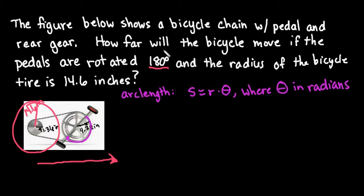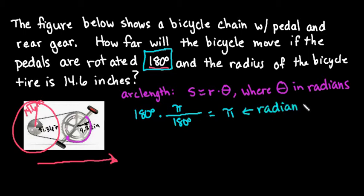The first thing we want to do is convert our 180 degrees into radians. Our conversion factor is pi over 180, so this simplifies to pi. So we are rotating half of a circle. Our next step is to figure out the arc length of the petals, or the gear that's around the petals.